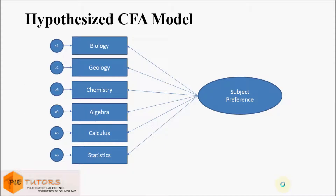In confirmatory factor analysis the researcher first develops a hypothesis about the factors that he or she believes are underlying the measures used. Further, he or she may impose constraints on the model based on these a priori hypotheses. By imposing these constraints the researcher is forcing the model to be consistent with his or her theory. For example, if it is hypothesized that there is just one factor accounting for the covariance in the measures, the researcher can create a model where all the measures load on a single factor.